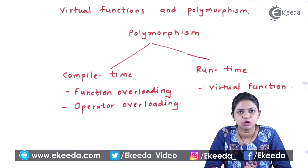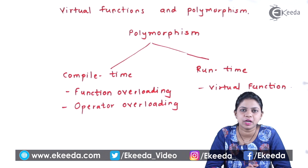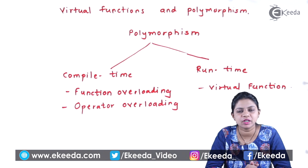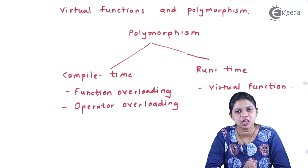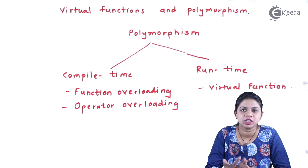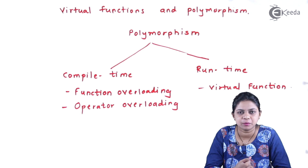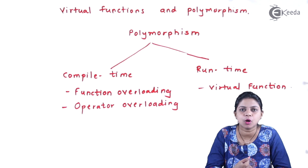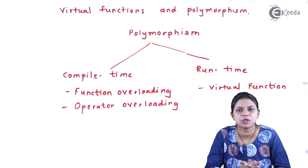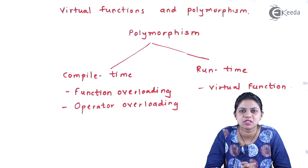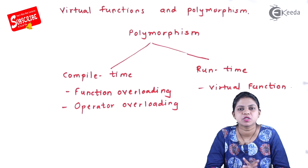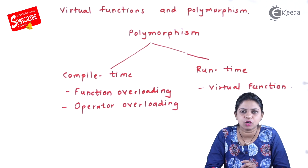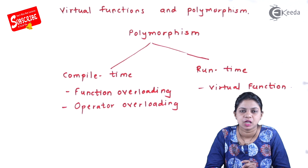The second type is operator overloading. Operator overloading is when we use operators with user-defined data types in the same way we use them with built-in data types. We have already discussed this concept in the previous video. Both function overloading and operator overloading come under the category of compile time polymorphism.